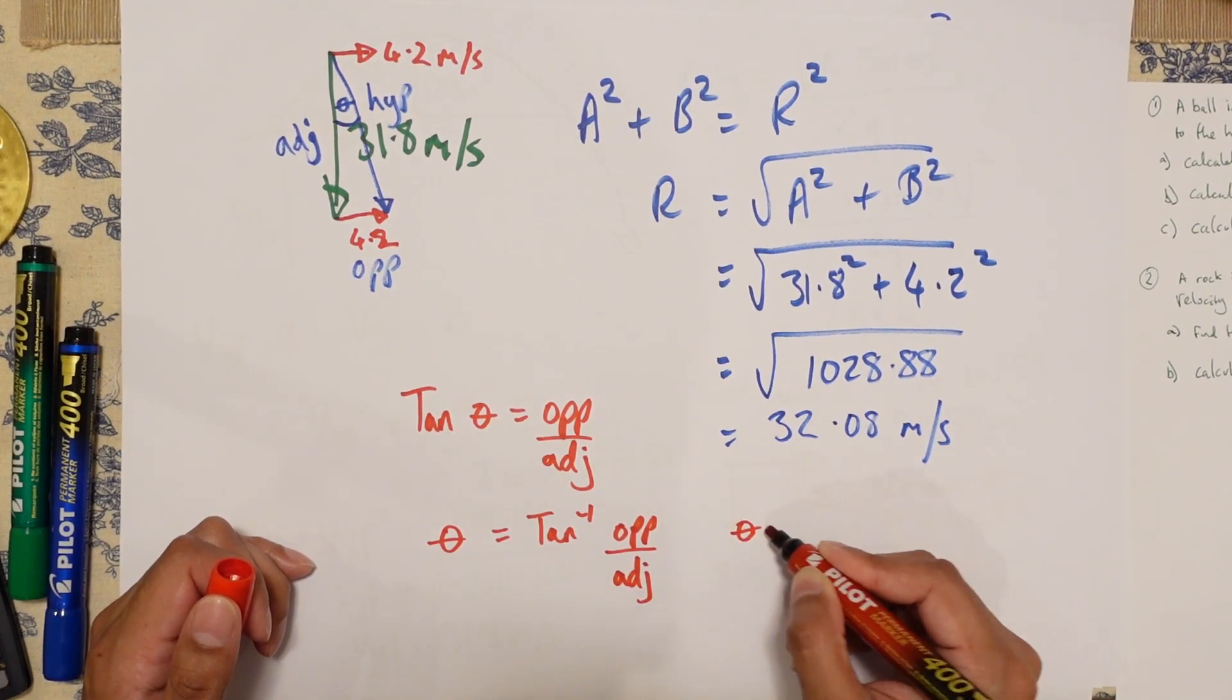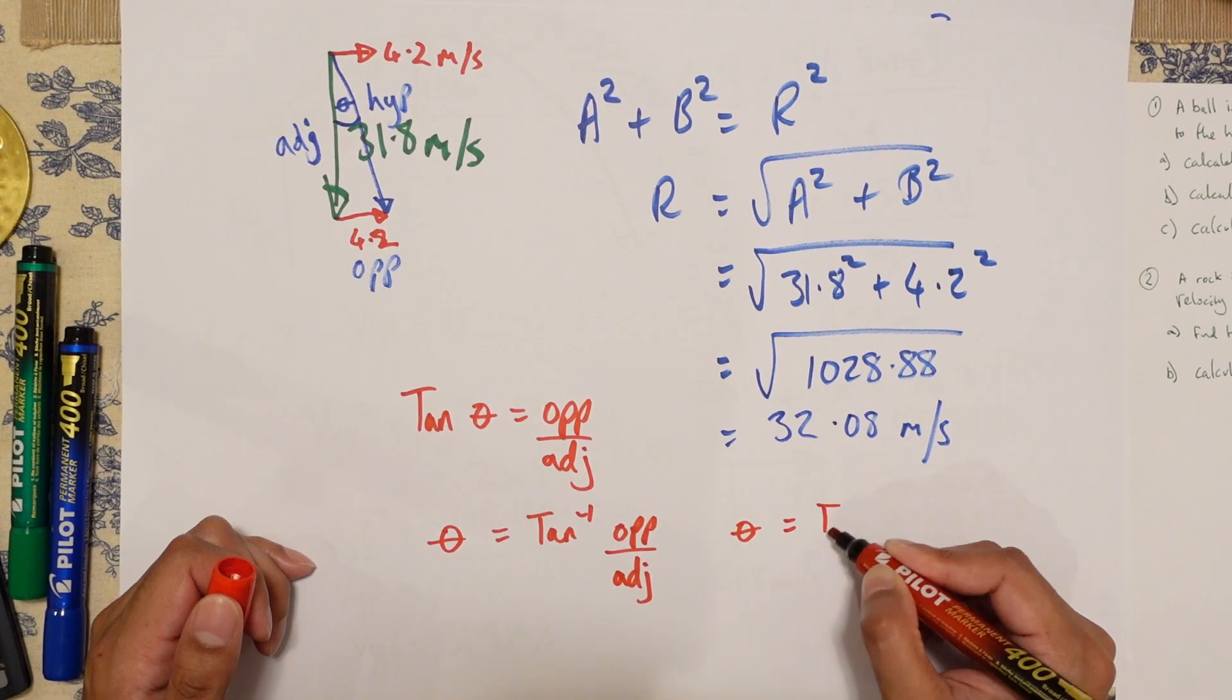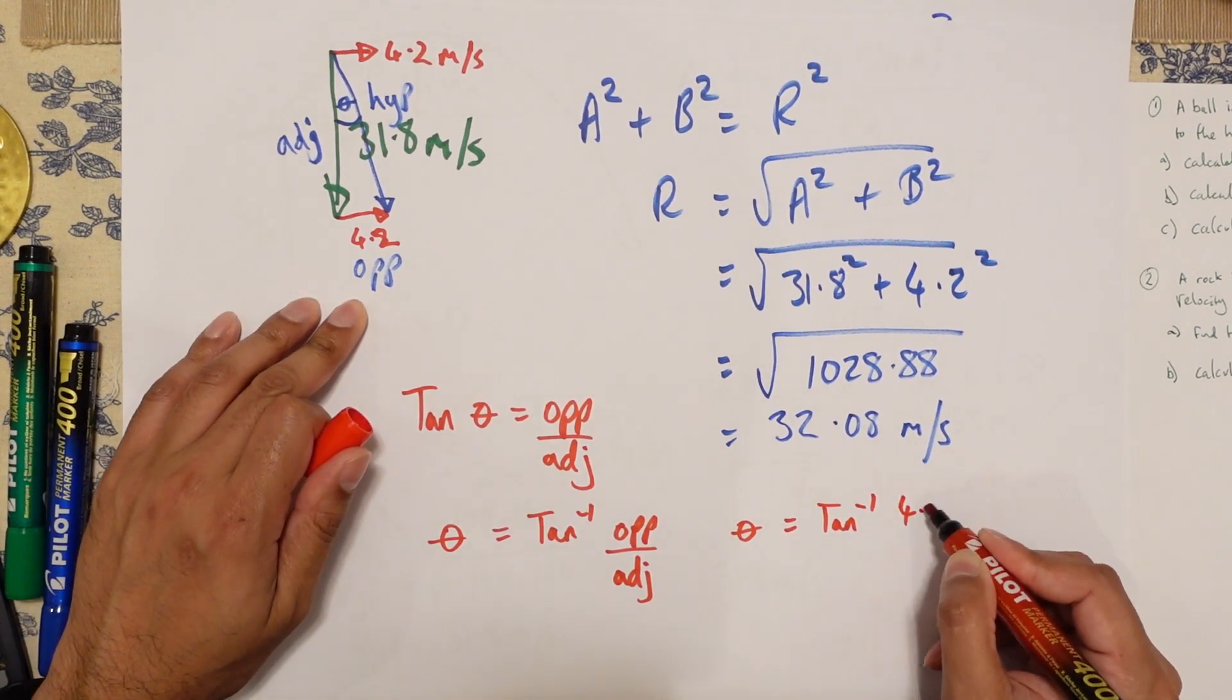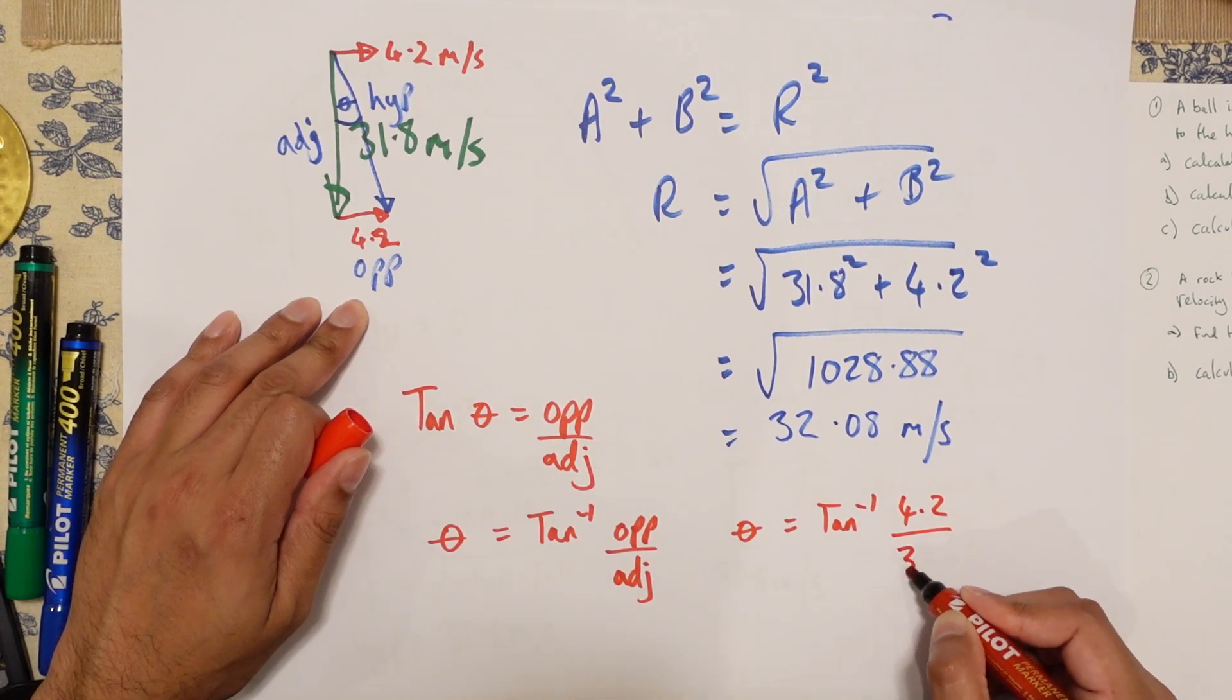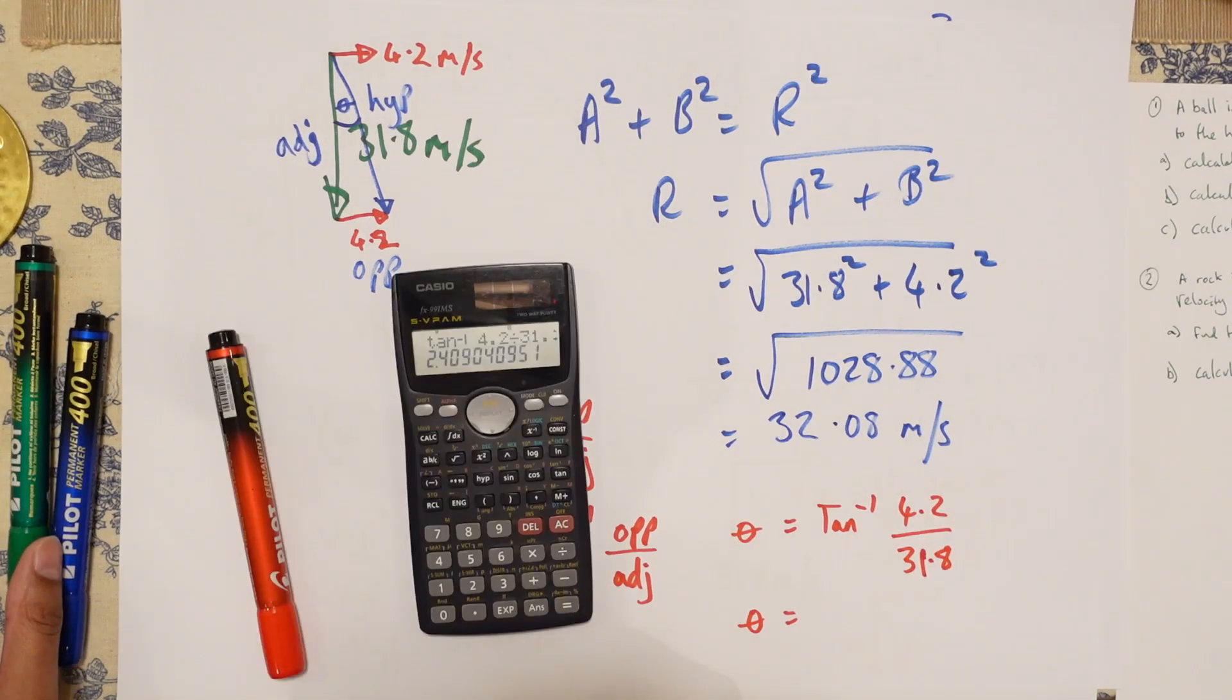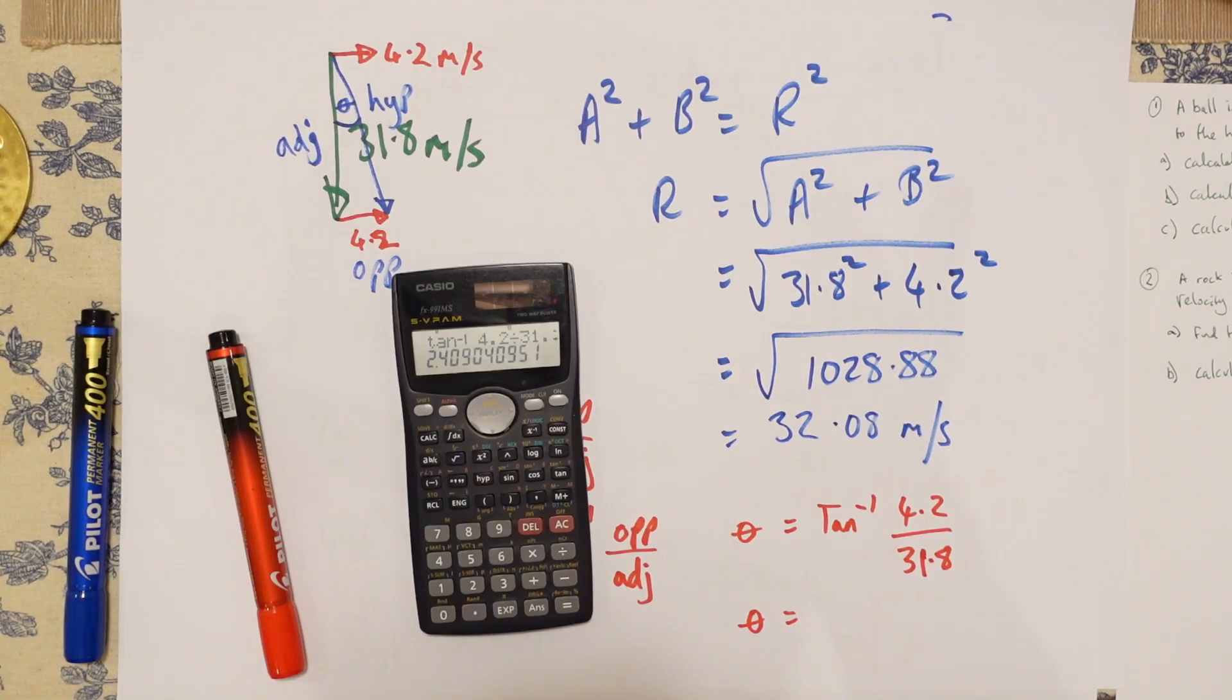Let's put the numbers in. So theta is tan minus one, opposite 4.2 divided by 31.8. Theta is 2.40 degrees.